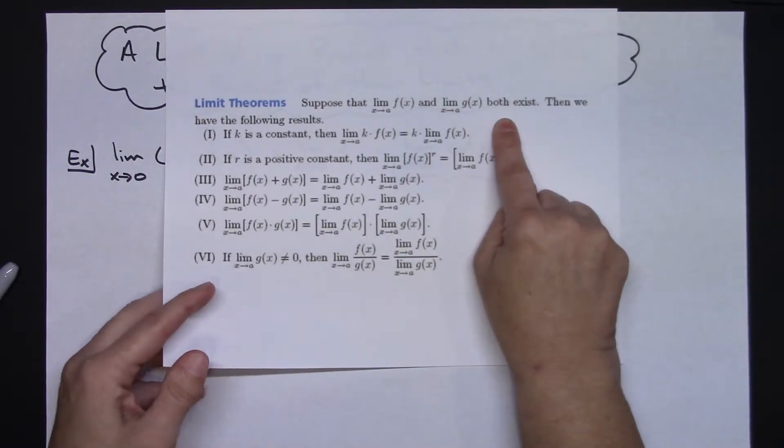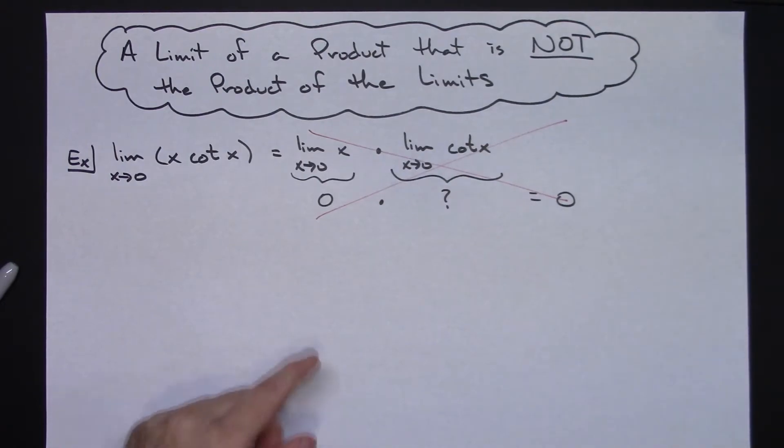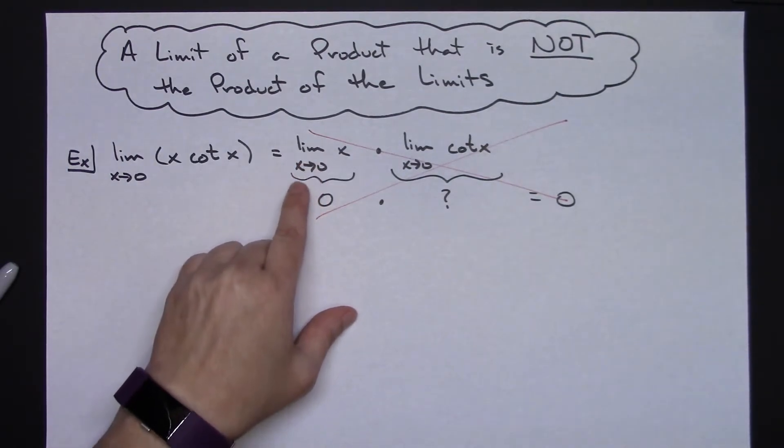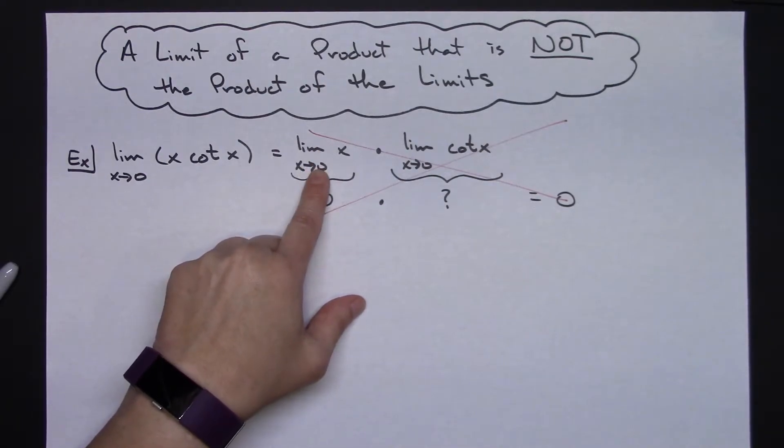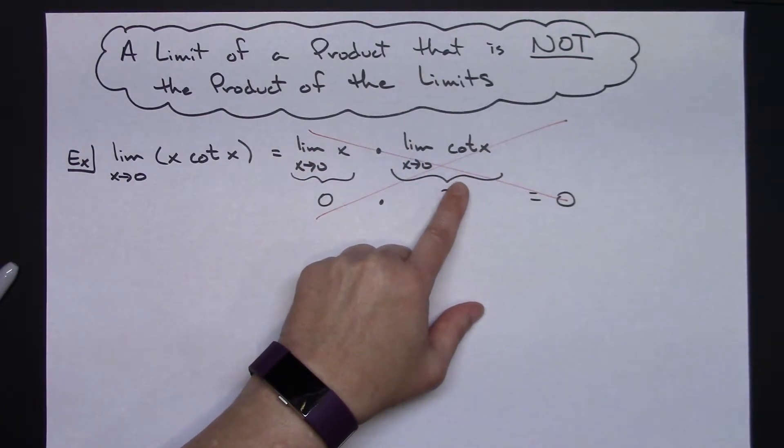And so that's what you've got to be careful and watch for. So we know the limit as x approaches 0 of x, we know that one exists. But what about this cotangent?